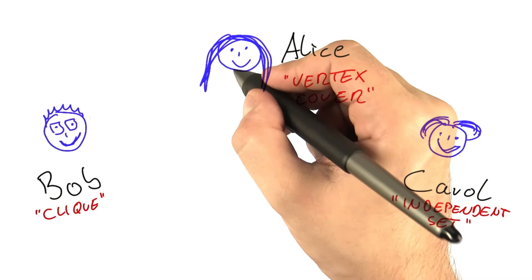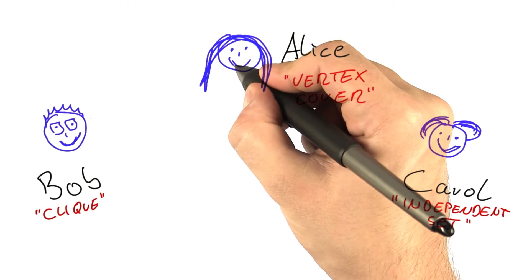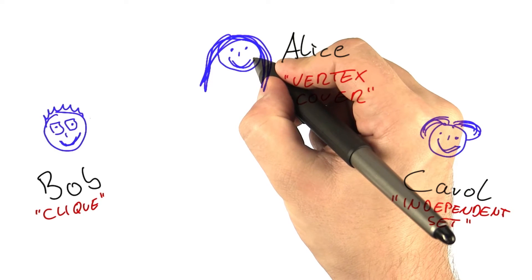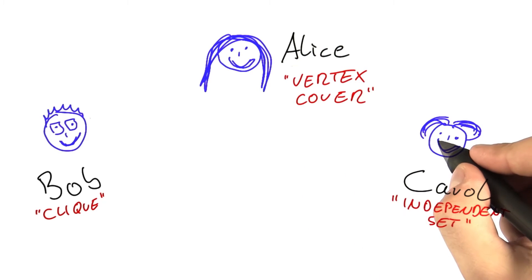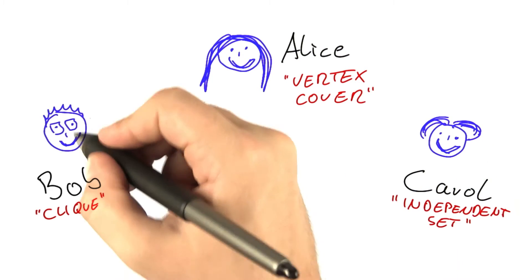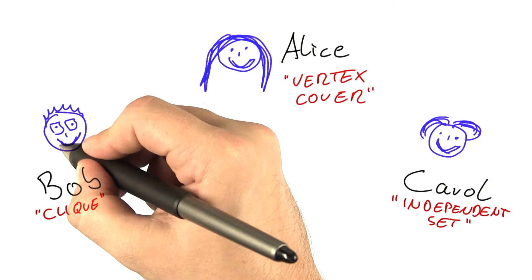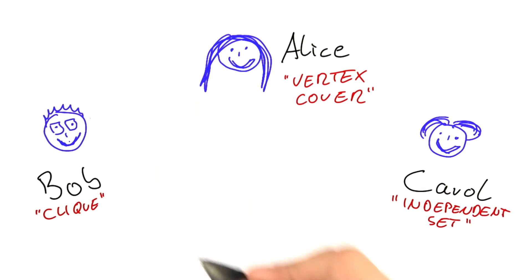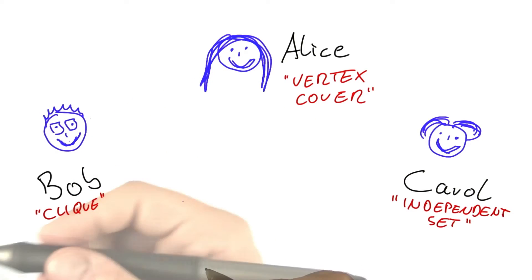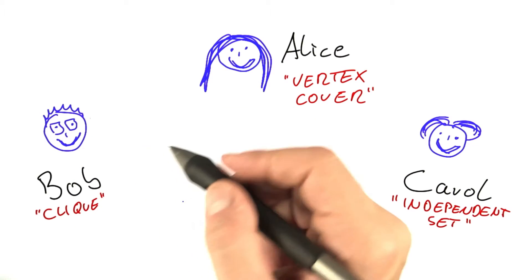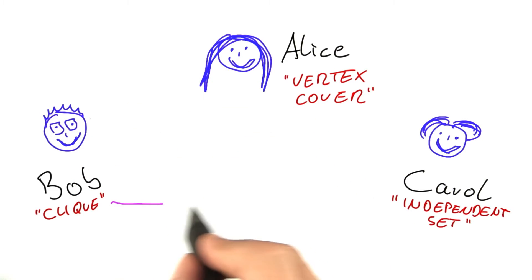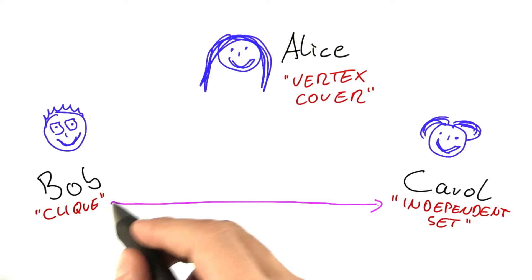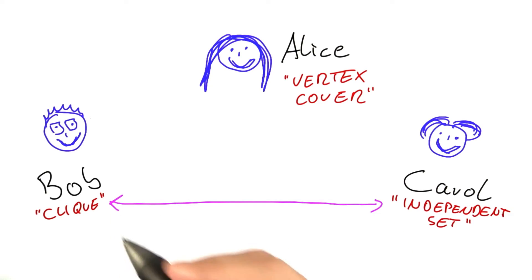And now that discovery is, of course, really great news for Alice, but it's also even better news for Carol, whose smile gets a bit bigger, and also Bob, because what they have now found out is this: clique and independent set are really closely connected.